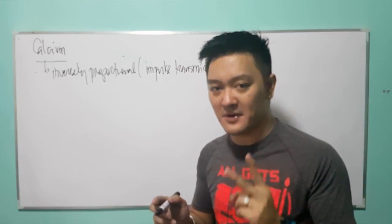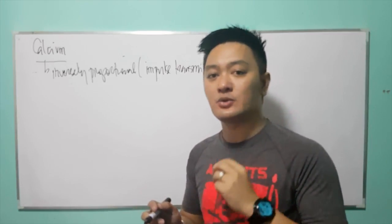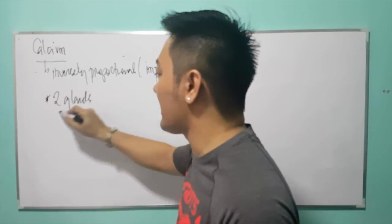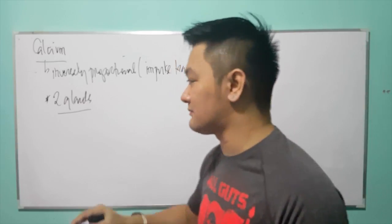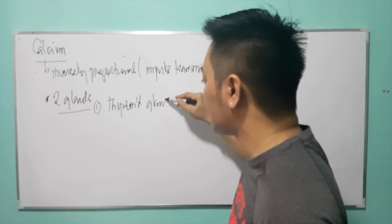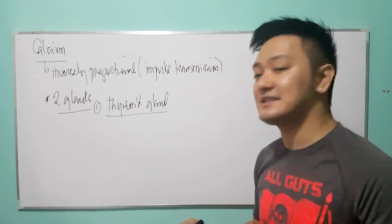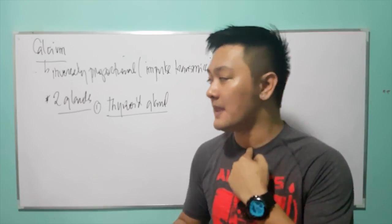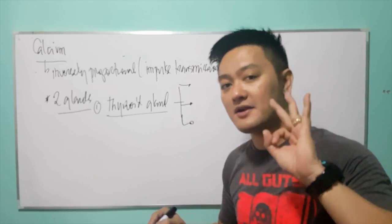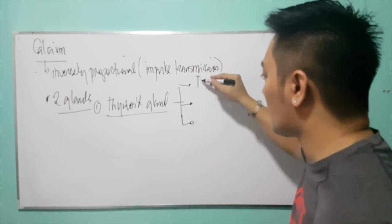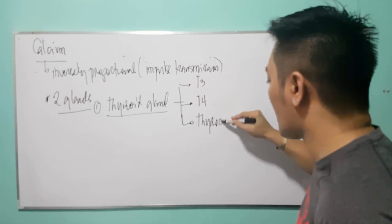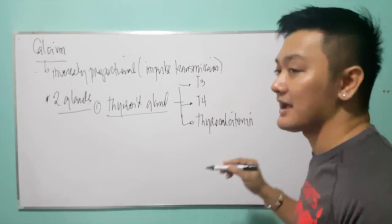There are two common glands in the body that will affect or regulate blood calcium level. The first gland is the thyroid gland, situated here in the neck. The thyroid gland produces three hormones: T3, T4, and thyrocalcitonin — also called calcitonin.